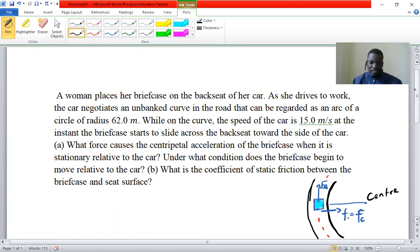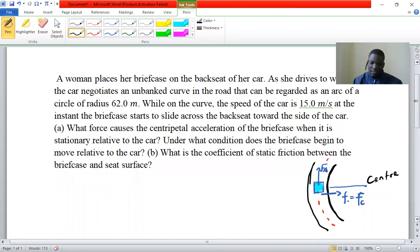Okay, so we have a question here. A woman places her briefcase on the back seat of her car as she drives to work. The car negotiates an unbanked curve in the road that can be regarded as an arc of a circle of radius 62 meters. While on the curve, the speed of the car is 15 meters per second at the instant the briefcase starts to slide across the back seat towards the side of the car. Question A says, what force causes the centripetal acceleration of the briefcase when it is stationary relative to the car? And then it goes further to say, under what condition does the briefcase begin to move relative to the car?